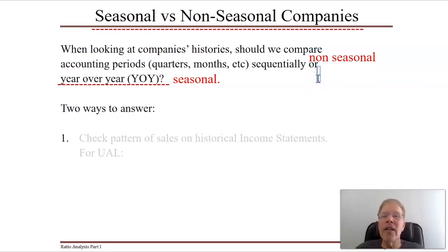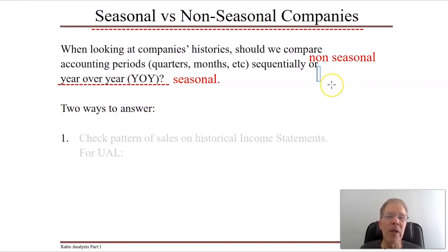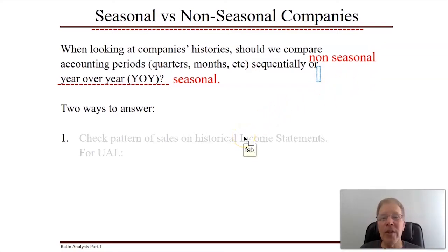An example of a non-seasonal company would be Procter & Gamble — they sell dish detergent, laundry detergent, paper towels, toilet paper, baby diapers — consumer commodities needed uniformly all year round. Retail banks and commercial banks also tend to be non-seasonal. In general, when you have a company to analyze, you need to know whether it's seasonal or not; it's not always intuitively obvious — including for both UAL and Southwest, ticker symbol LUV.